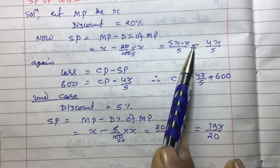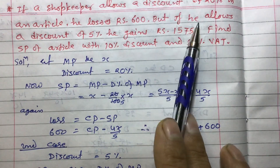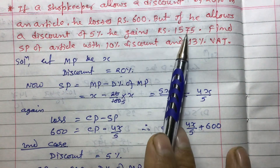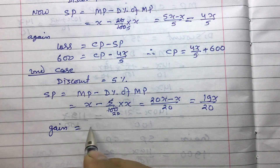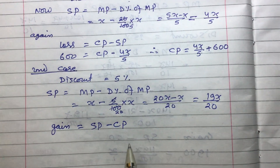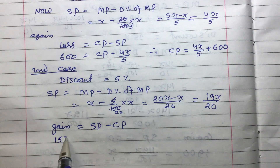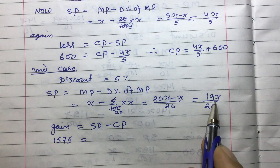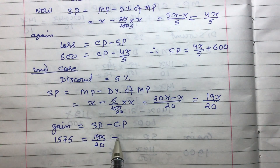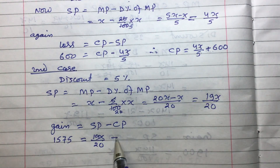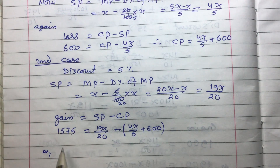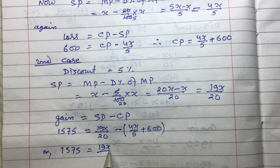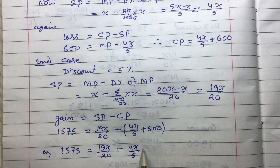In the second case, he gains rupees 1575. Gain equals SP minus CP. So 1575 equals 19X by 20 minus CP. Substituting CP as 4X by 5 plus 600, and being careful with the minus sign, we get: 1575 equals 19X by 20 minus (4X by 5 plus 600).